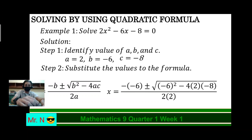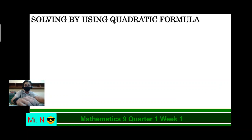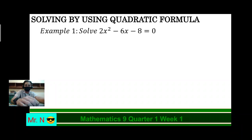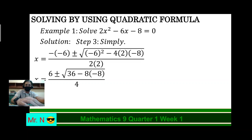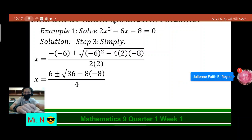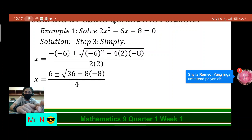So we're done substituting. Now we're going to simplify. Negative times negative 6 is positive 6. The square of negative 6 is 36. Negative 4 times 2 is negative 8, times negative 8. All over 2 times 2 is 4.